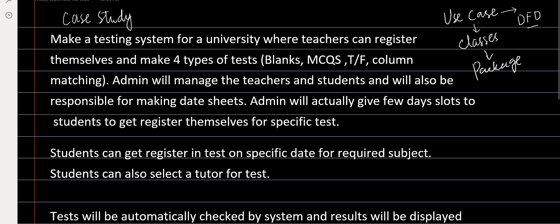So if I start reading — it says 'make a testing system.' Now 'make' is a verb, but this is about the whole system so we are not going to identify it. It continues: 'for a university where teachers' — now first of all, 'teacher' is a noun, so we just identified our first noun. Then we have 'can register' — when something is doing something, it's a verb. So teacher is a noun and they can register themselves. Teachers can register and make four types of tests.